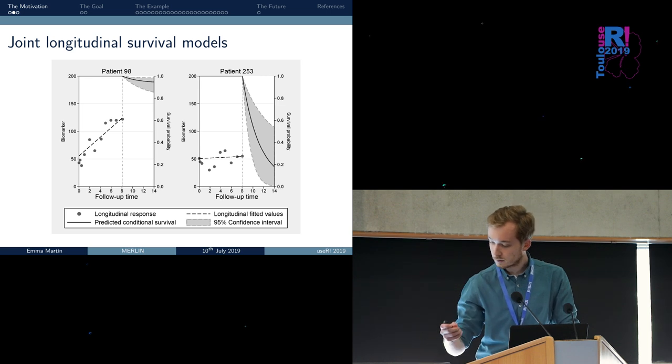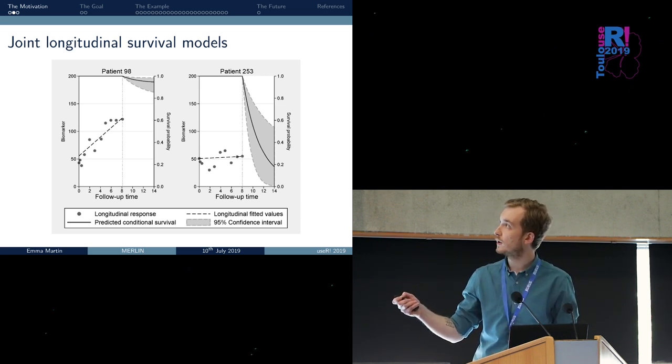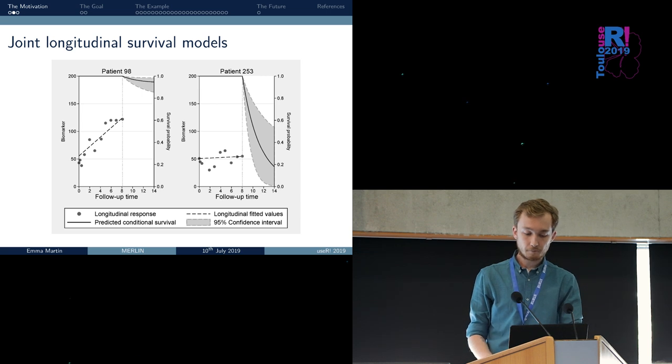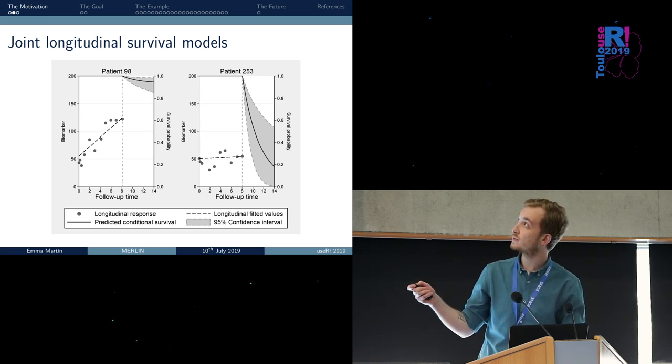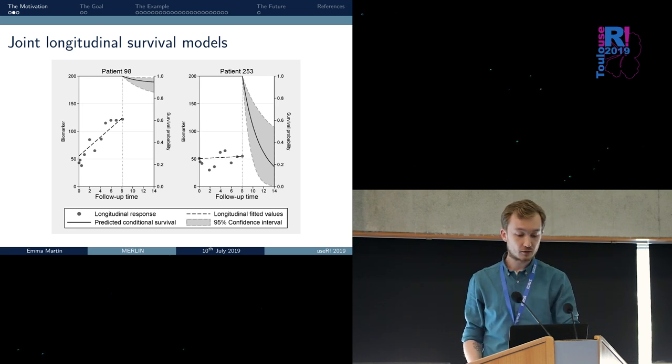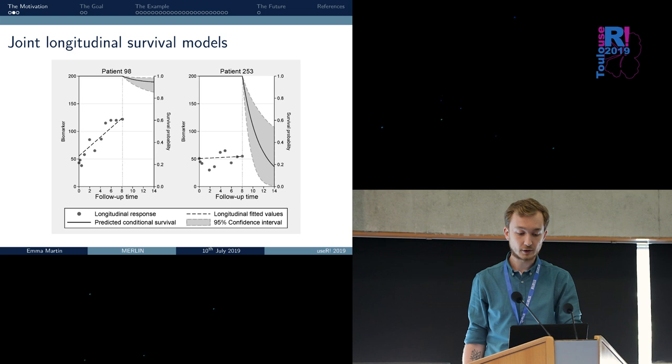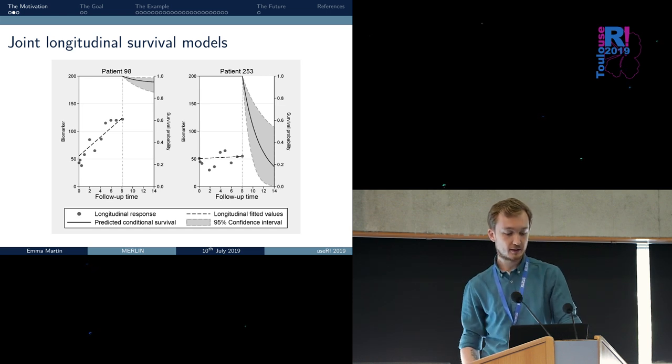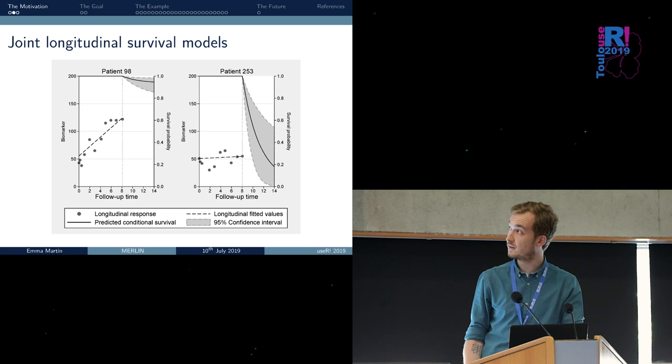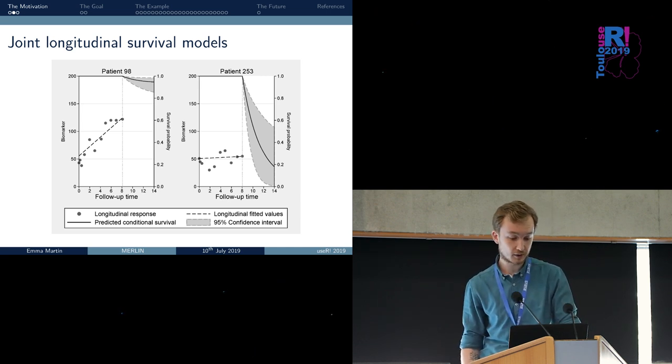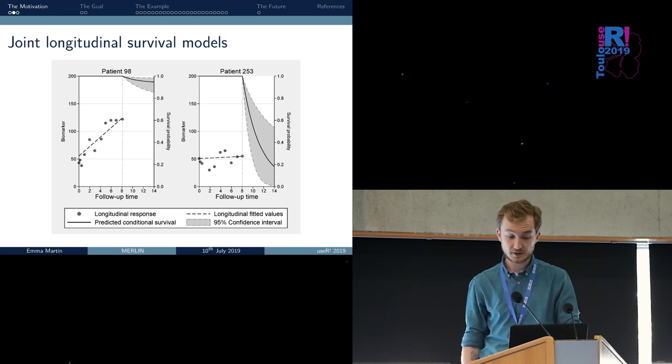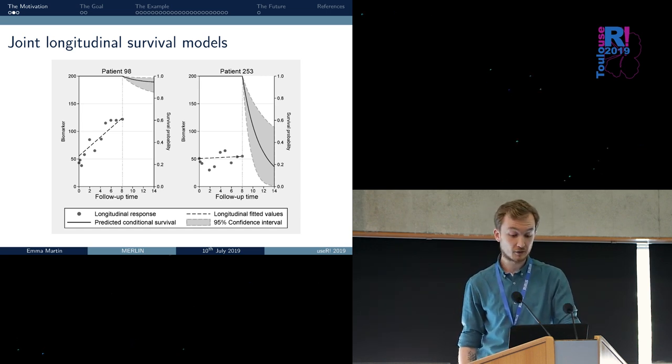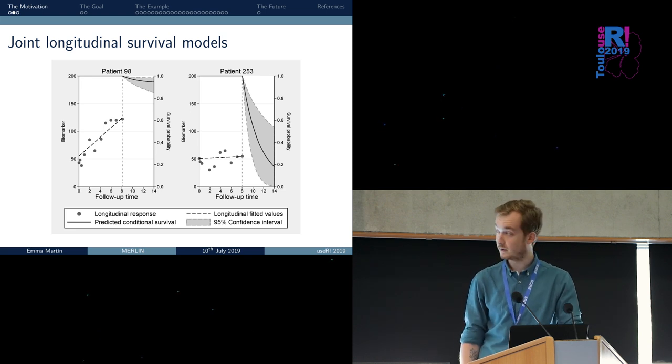For instance, we have one longitudinal biomarker that is measured repeatedly over time, and we also have a survival outcome of interest, say time to death. These two distinct outcomes are modeled jointly, and they inform each other. Patient 98 has an increasing slope for the values of the biomarker, and in fact, the predictive survival is much higher compared to patient 253, that has lower values of the biomarker, and therefore the predictive survival is much lower.